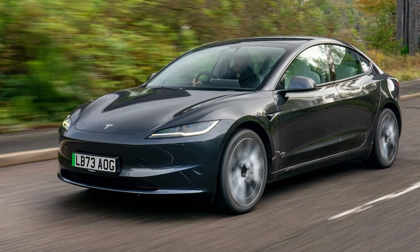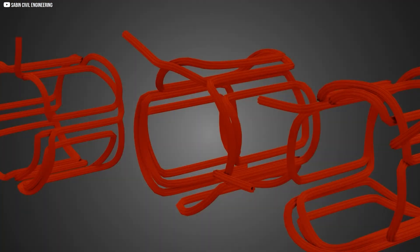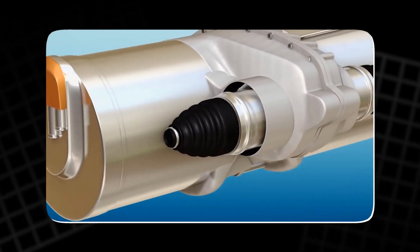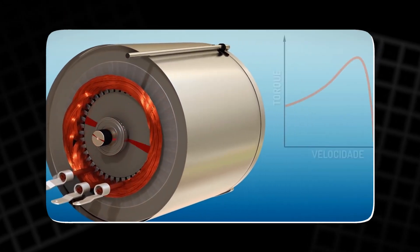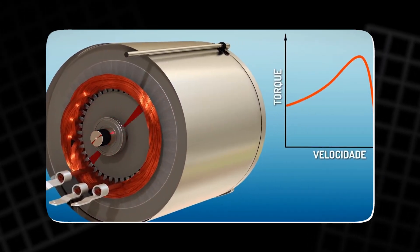The Model 3 uses a six-pole motor design, meaning the rotor has six magnetic poles instead of the more traditional four. More poles generally mean more torque production and smoother operation.